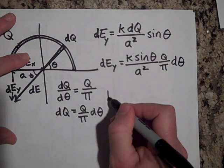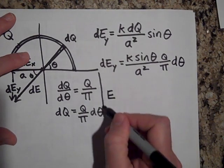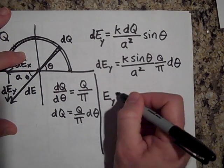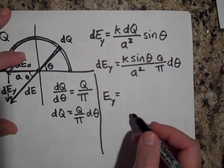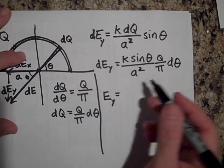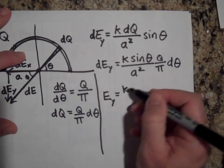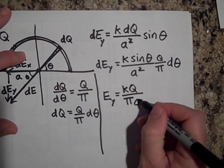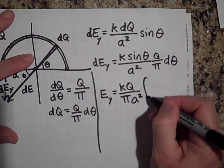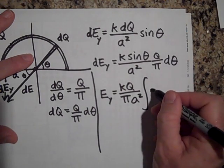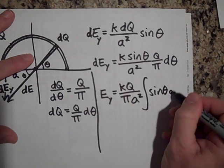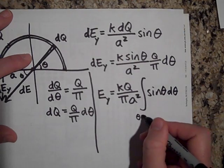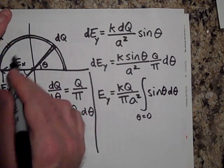Okay. But if I want the electric field then in the Y direction, I'm going to sum up with an integral. Now, before I write the integral, I'm going to pull out all the constants and we have a lot of them. We have K, Q, pi and A squared. So I pulled out all those constants. And now I have just left in there, sine of theta D theta. And I'm going to integrate from theta equals zero right here to theta equals pi.